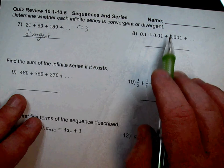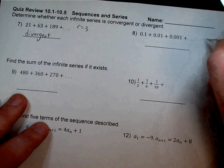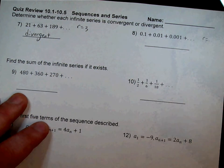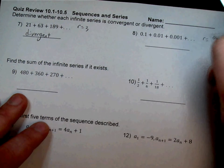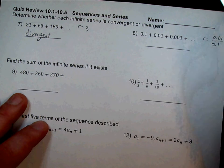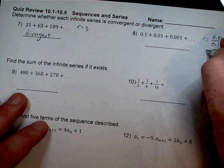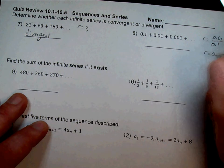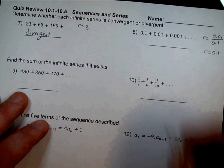Number 8: if you're unsure what R is because of decimals, take the second term and divide it by the first term. Take 0.01 divided by 0.1, and you get 0.1. Since 0.1 is less than 1, that makes it convergent.